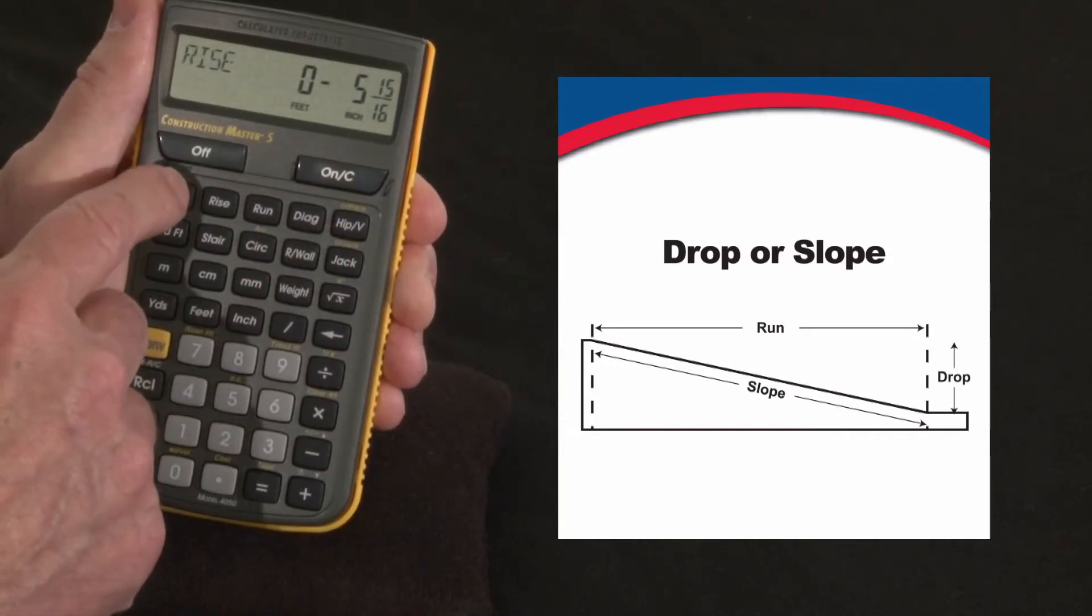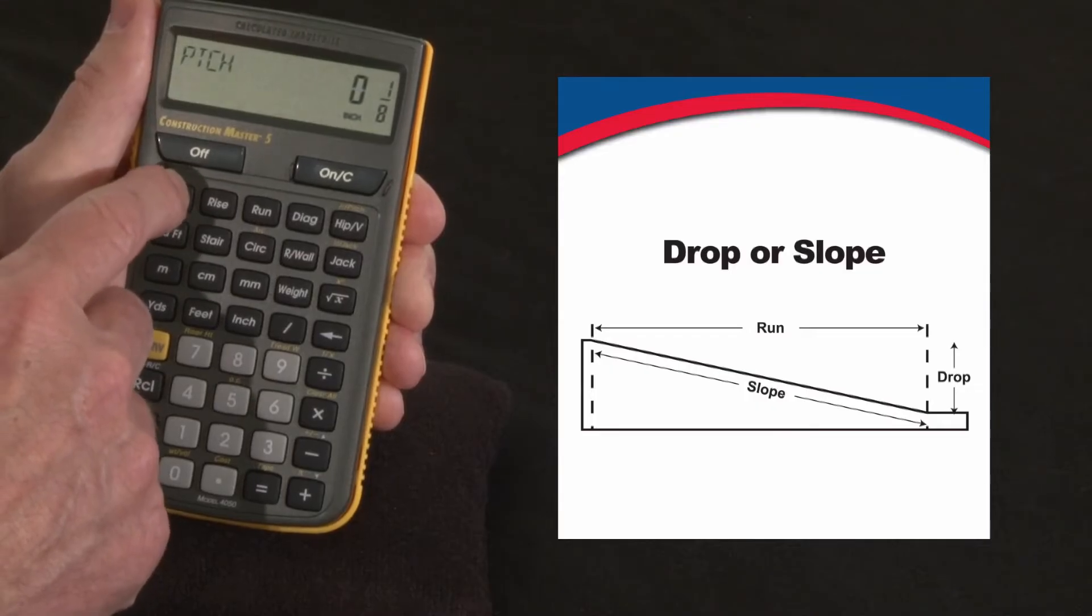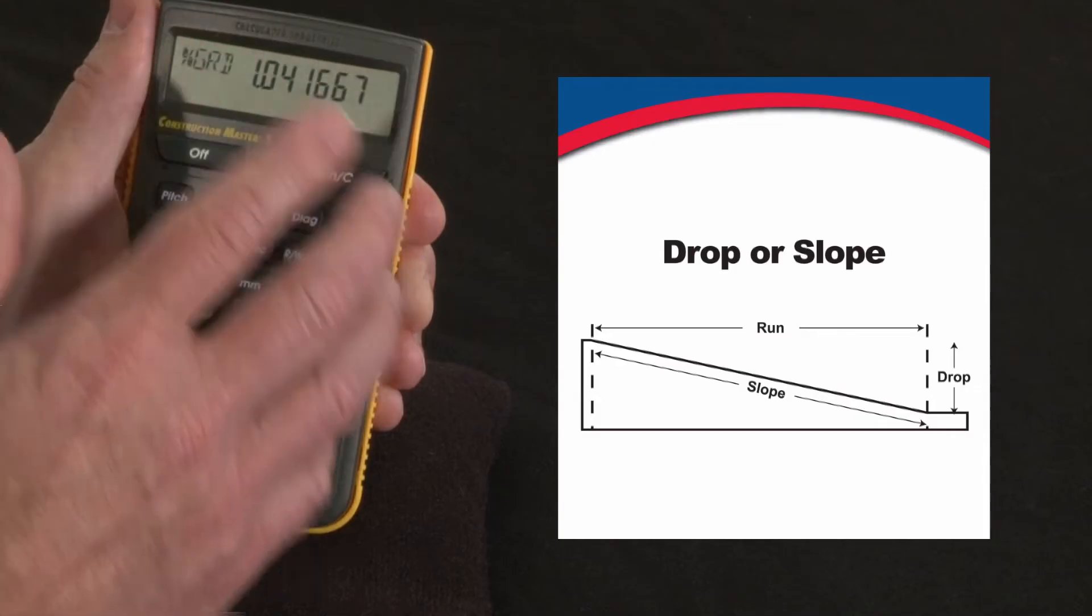Another thing you can look at is what the percent grade or slope is. Well, we know it's an eighth inch, 0.6 degrees or 1.04 percent.